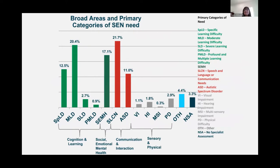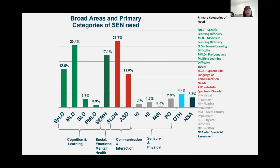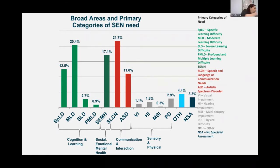This is a slide from Malcolm Reeve, one of our national leaders with NaSENCo Whole School SEND — it's his handy reference slide. It helps you understand how the four broad areas of need pan out in terms of percentages using national data. The pattern is very similar across regions. The key five areas coming out are: specific learning difficulties, moderate learning difficulties, social emotional mental health, speech language communication needs, and autistic spectrum disorder. It's a nice thing to keep in a file or on your wall.